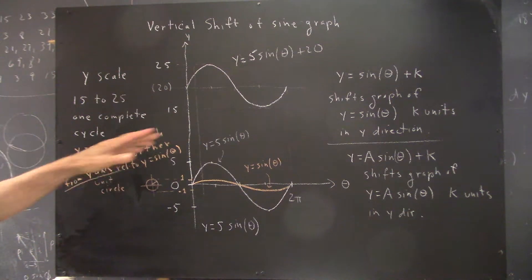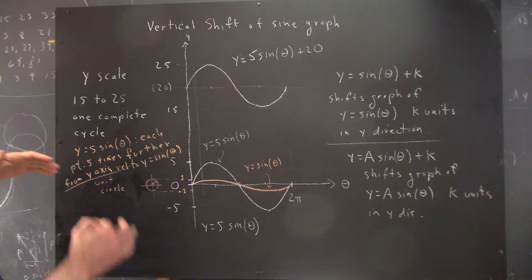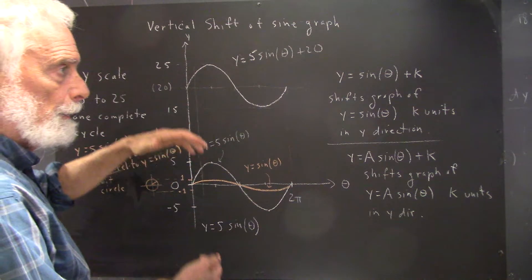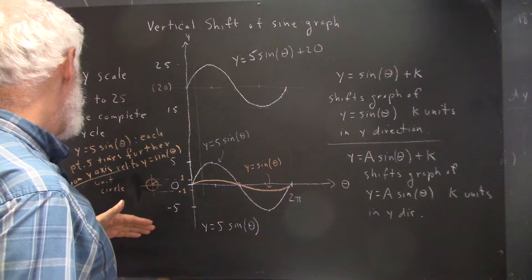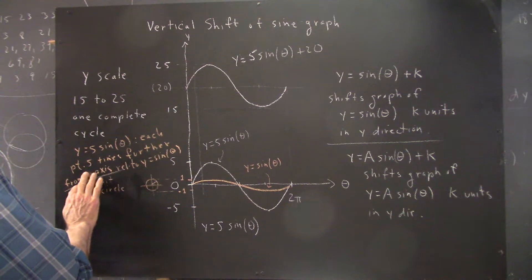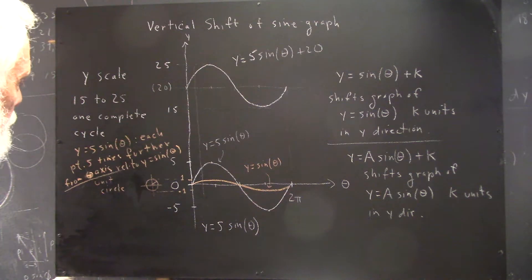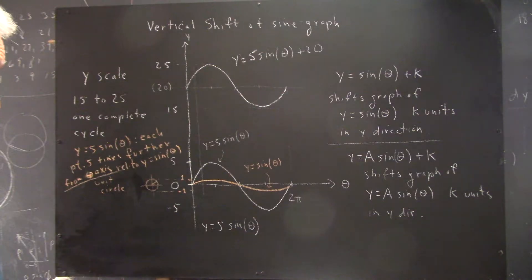So we start with our unit graph of y = sin(θ), and taking each point five times further from the y-axis—I said from the y-axis, I should say from the theta axis—taking each point five times further from the theta axis.